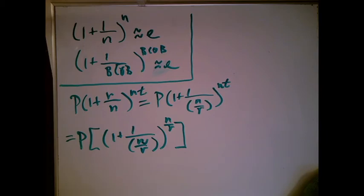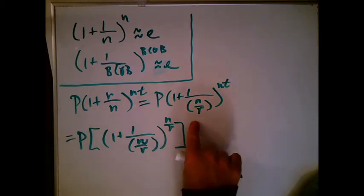Unfortunately, I did something illegal. My old exponent was Nt. My new exponent is N over R and I want to fix that. Well, we can fix that without killing ourselves because of rules of exponents. We know that when you take a number and raise it to a power and raise it to a power, you multiply the exponents.